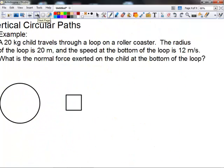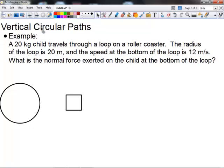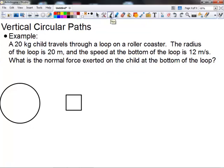Let's look at a vertical circle. If we have a vertical circle, things are a little bit different. We have a 20 kilogram child traveling through a loop on a roller coaster. The radius of the loop is 20 meters, and the speed at the bottom of the loop is 12 meters per second. What's the normal force exerted on the child at the bottom of the loop?